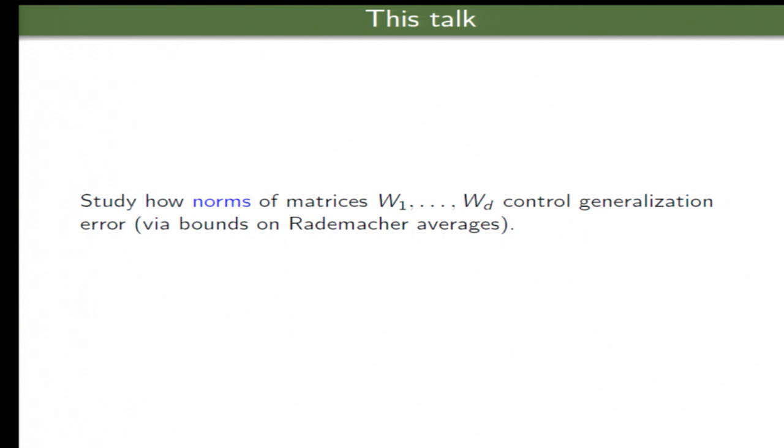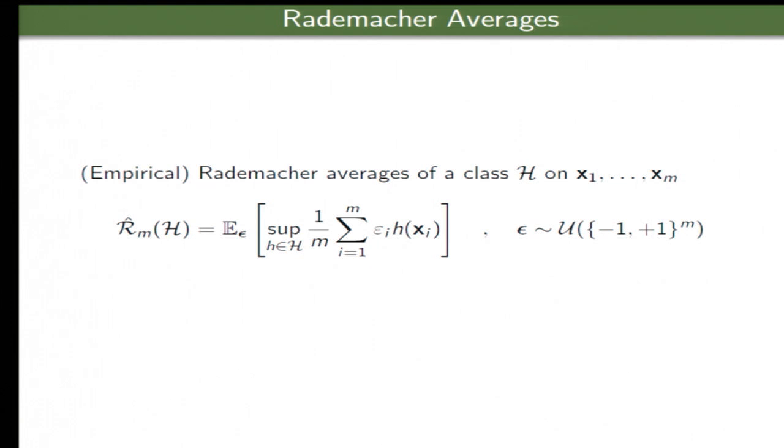And again, the aim is to study how norms of matrices W1 through WD govern the sample complexity of neural networks and the capacity of the class of neural networks. So we typically study the question of generalization through the lens of Rademacher complexity. The Rademacher averages, the empirical Rademacher averages are defined as the expected supremum over coin flips, the worst correlation of functions in the class on the data with random signs. And it's well known that this object is classically related as both upper and lower bound to the uniform deviations of empirical and expected quantities over the class.